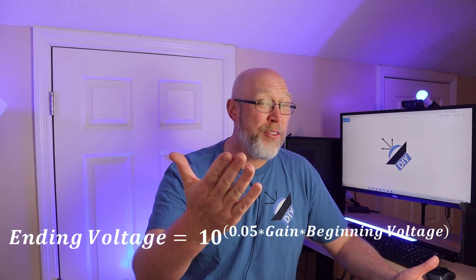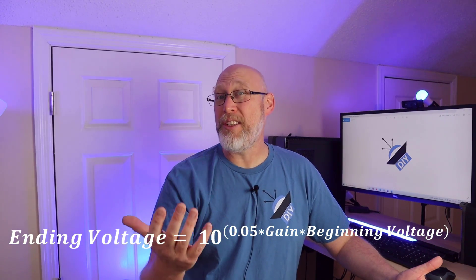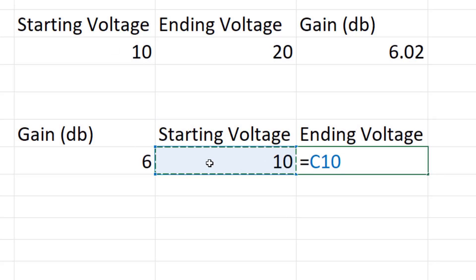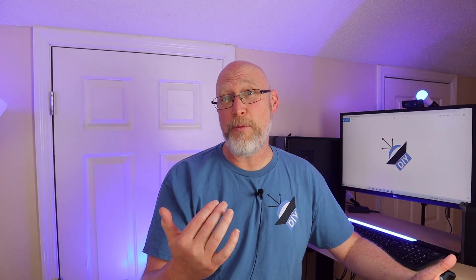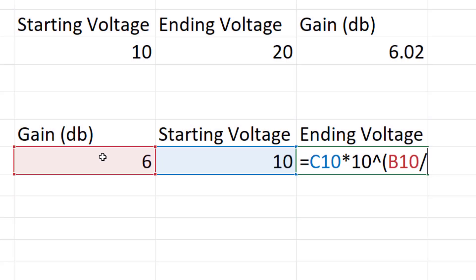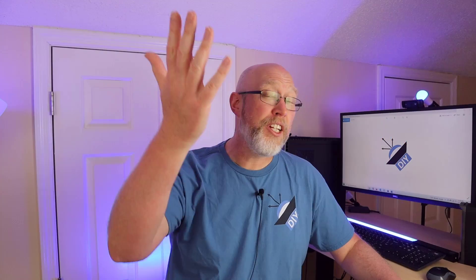To gain loudness you increase the voltage — you turn up the gain. If you've ever used an equalizer this should make sense. Equalizers are set up to either cut or boost by some amount of dBs, with boost labeled as a plus and cut labeled as a minus.